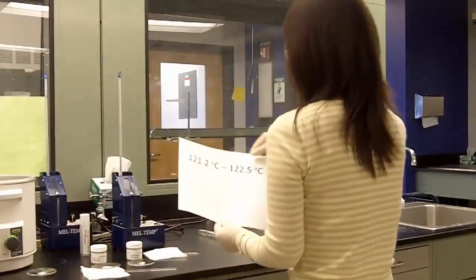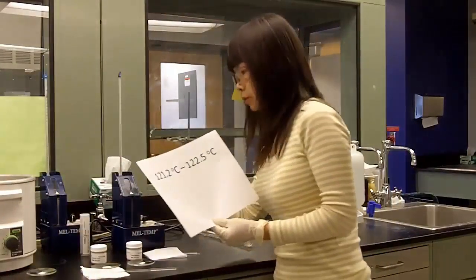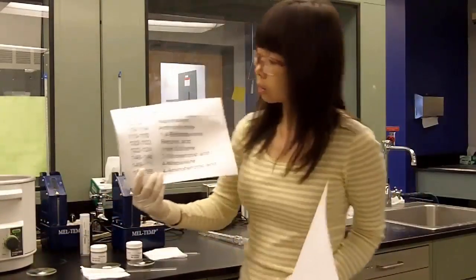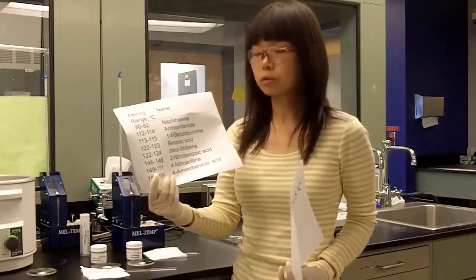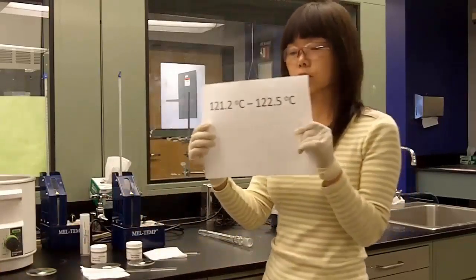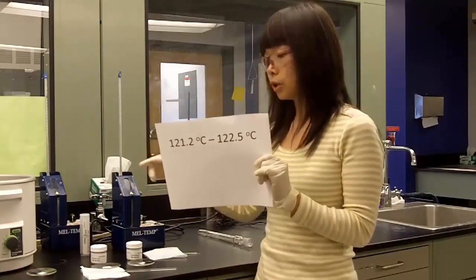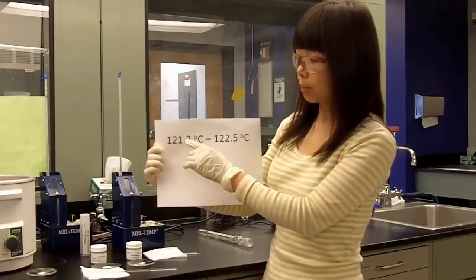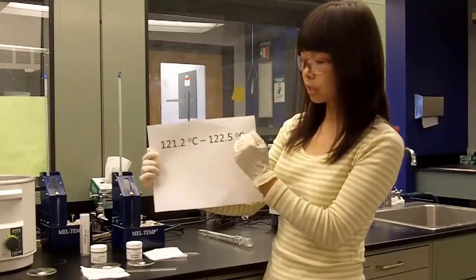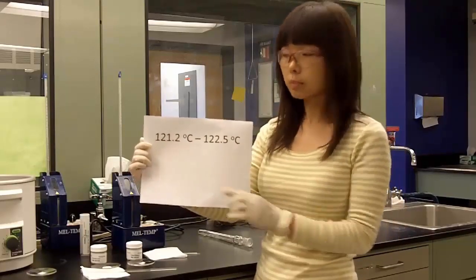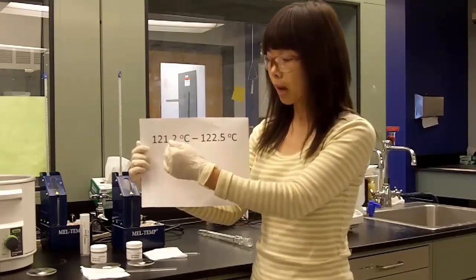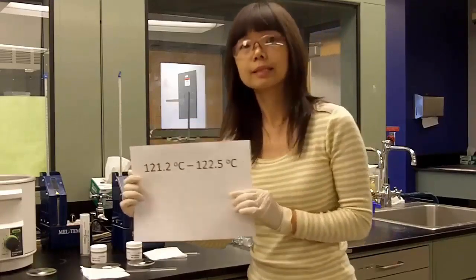One final thing we need to point out is the recording of the temperature. The chart given to you doesn't have decimal places, so this is just a rough idea. When you actually record your temperature, you need to pay attention to your significant figures. From the thermometer, you can record 121.2 degrees, that's the starting of your melting point, to 122.5 degrees, that is the ending of your melting point. Always make sure you have one digit after the decimal places and record the melting range of your observation.